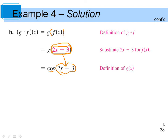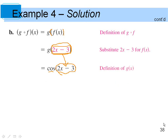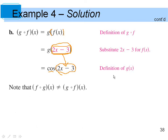So we're composing two functions into one larger function. Simplified, g of f of x equals cosine of 2x minus 3. Note that before we had 2·cos(x) − 3, and now we have cos(2x − 3) — so g of f is not equivalent to f of g. Therefore f of g of x is not equivalent to g of f of x.